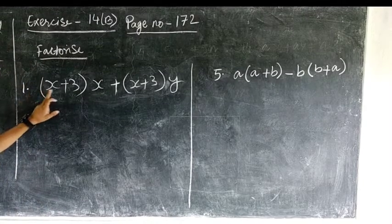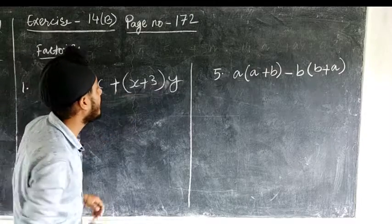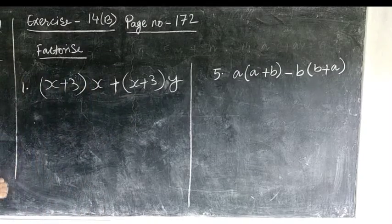Factorize question number 1: (x+3) multiplied by x, plus (x+3) multiplied by y. How to factorize this expression?